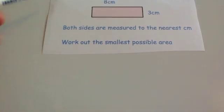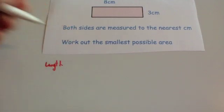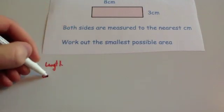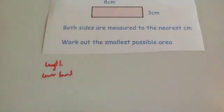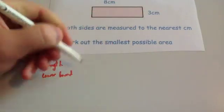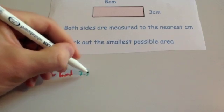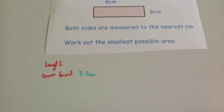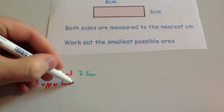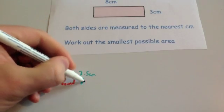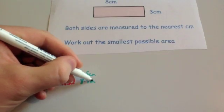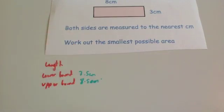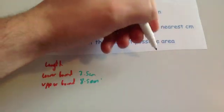Here we've got a picture of a rectangle, and it says both sides are measured to the nearest centimetre. Work out the smallest possible area. The length is 8 centimetres, so to the nearest centimetre the lower bound is 7.5 centimetres and the upper bound is 8.5 centimetres.